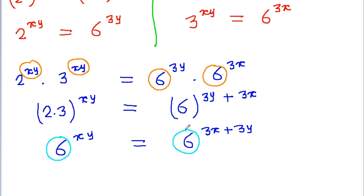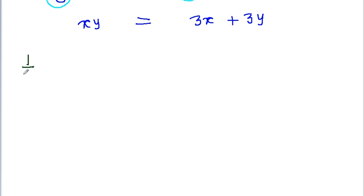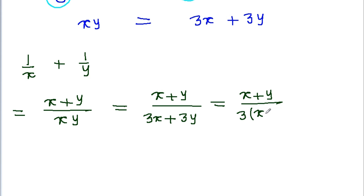Now we get 6 to the power xy is equal to 6 to the power 3x plus 3y. Since the base is the same, we can equate the powers, so we get xy is equal to 3x plus 3y. Now we have to find the value of 1 by x plus 1 by y, which can be written as x plus y by xy. Substituting xy equals 3x plus 3y, we get x plus y by 3 times x plus y. The x plus y cancels, and we get 1 by 3. So the value of 1 by x plus 1 by y is 1 by 3. Thank you.